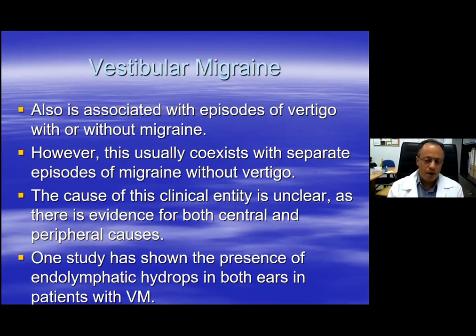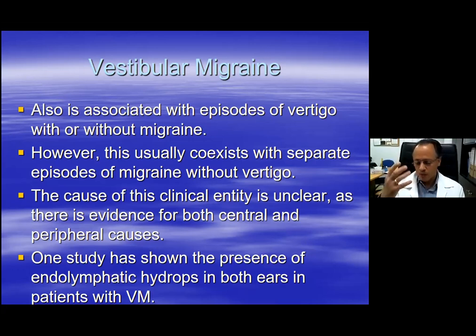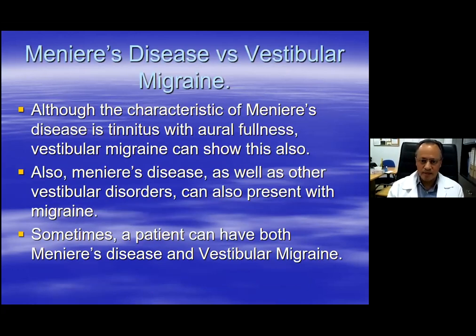We also have vestibular migraine, which is similar to Meniere's disease in that episodes are spontaneous. These episodes usually coexist with or are associated with separate episodes of migraine, and the guidelines from the Bárány Society agree that you do need migraine episodes to have a diagnosis of vestibular migraine — either together with or separately from the vertigo episodes. The important thing is that the main complaint is vertigo, not migraine. The cause of vestibular migraine is unknown, with reports of both central and peripheral causes. How do you decide between Meniere's disease and vestibular migraine?